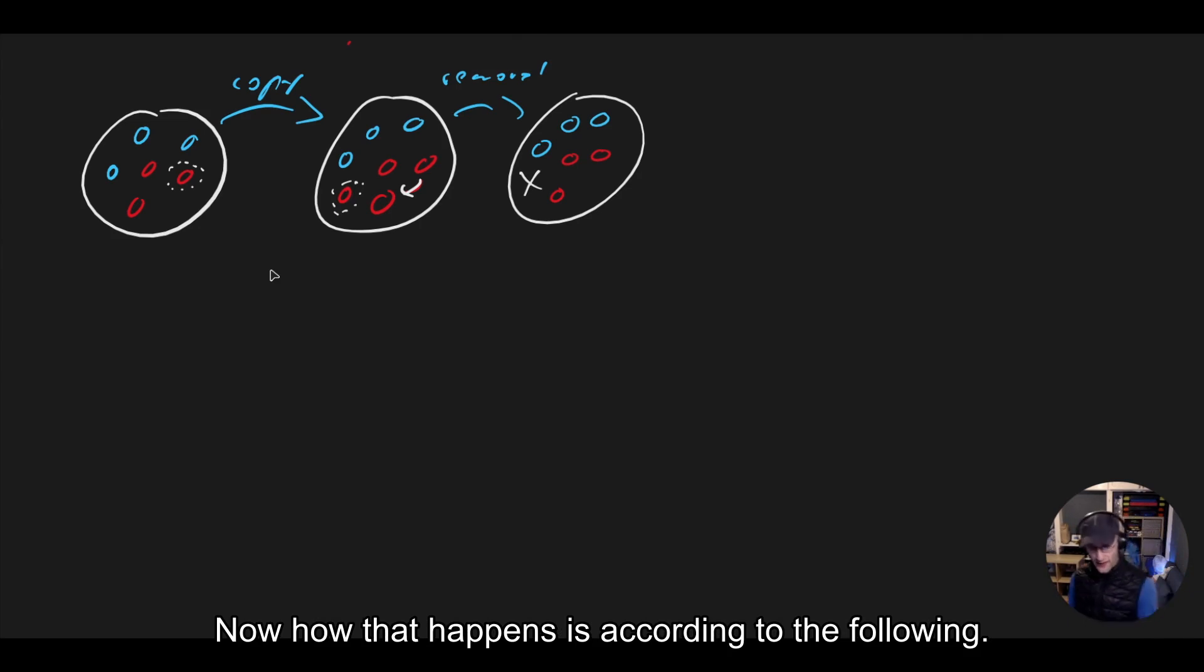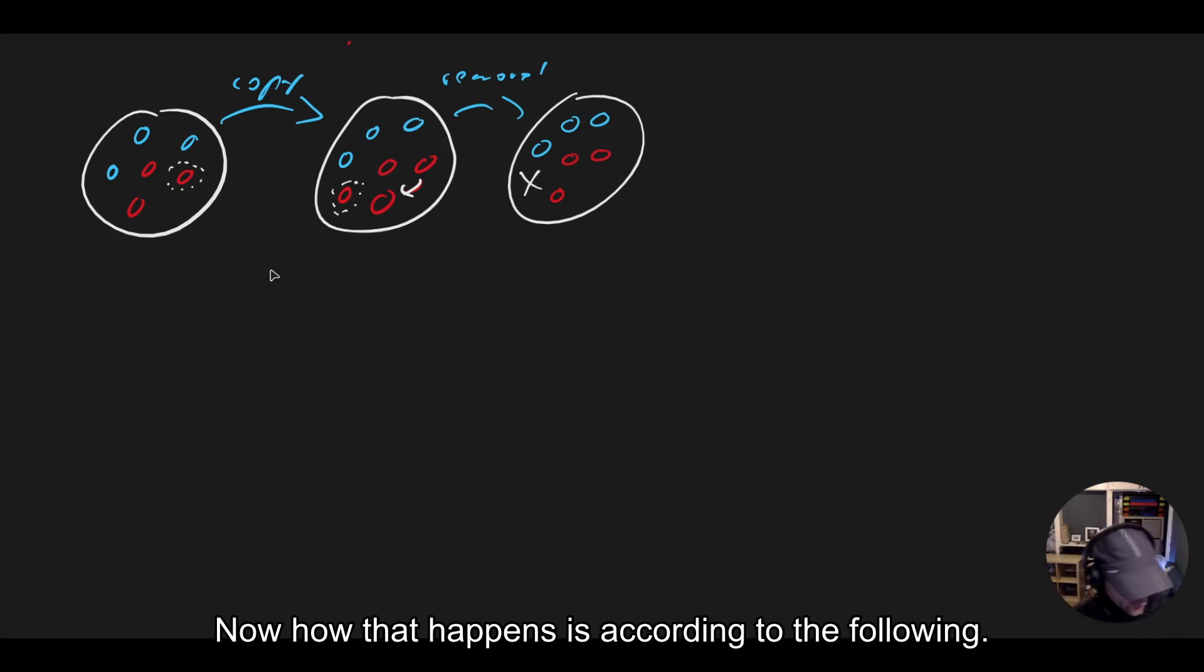Now, how that happens is according to the following. Every individual has a fitness FK that is calculated, and then the copying probability...